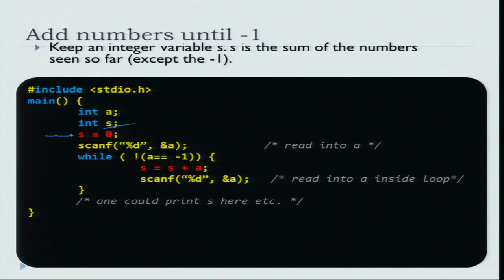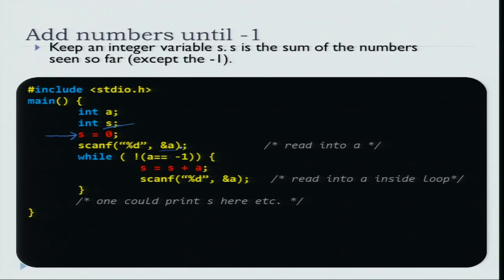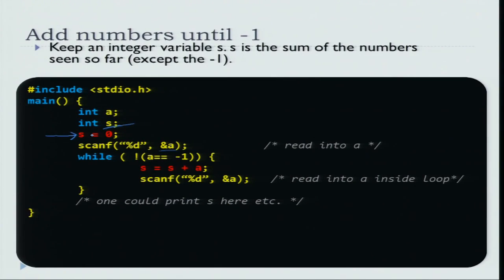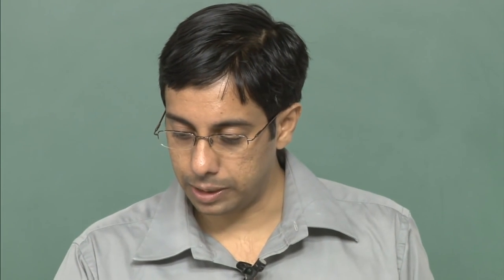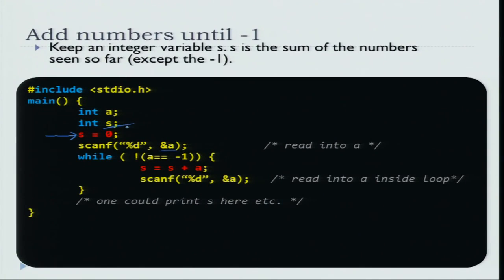It is very very important that when you declare a variable you should initialize it properly. In the case of a, we did not initialize it because we were reading the first number as soon as a was declared, but in the case of a sum variable, you would use s to maintain the sum as you read numbers. So it is important that you start with s equal to 0. The initialization step marked by this arrow is quite important. If you do not initialize it properly then the sum may not be correct. You keep a variable s which is supposed to hold the sum of these numbers and initialize the sum to 0.